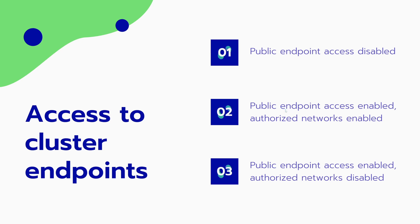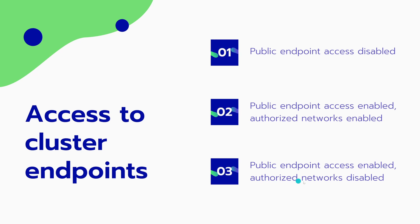The second way is that the public endpoint access is enabled but only for certain authorized networks — we give access to only specific networks to connect to that endpoint, and this is what I'm going to demonstrate. The third option is public endpoint access enabled with authorized networks disabled, meaning anyone from the internet can access your endpoint, which is the least secure of all three.